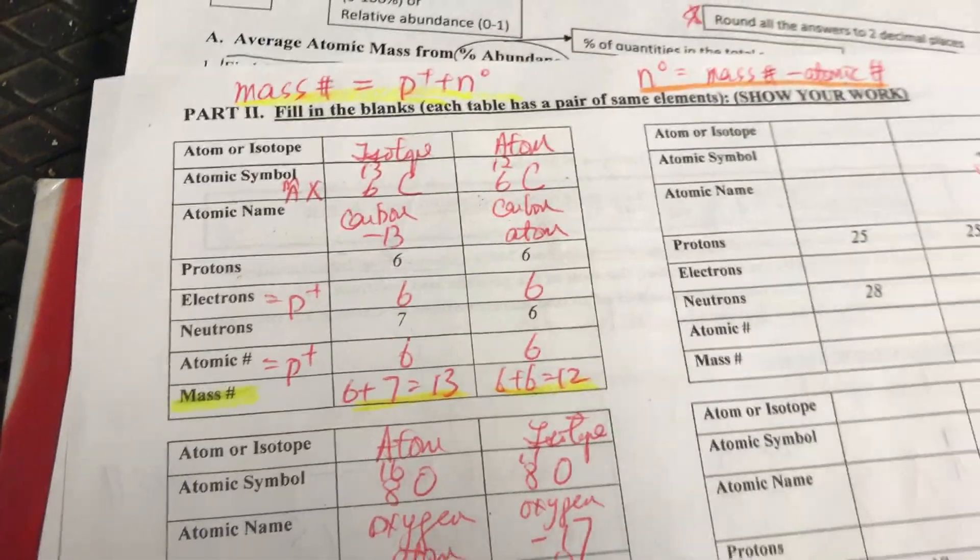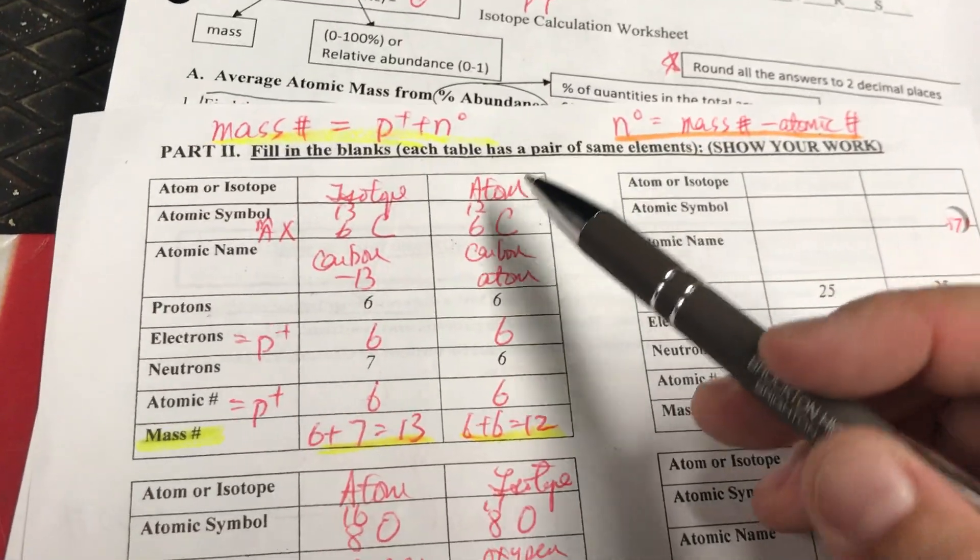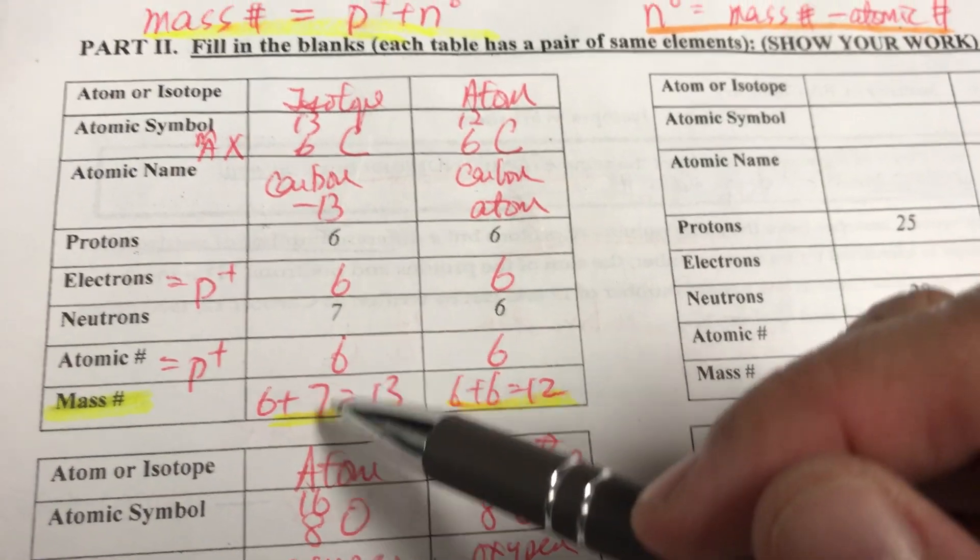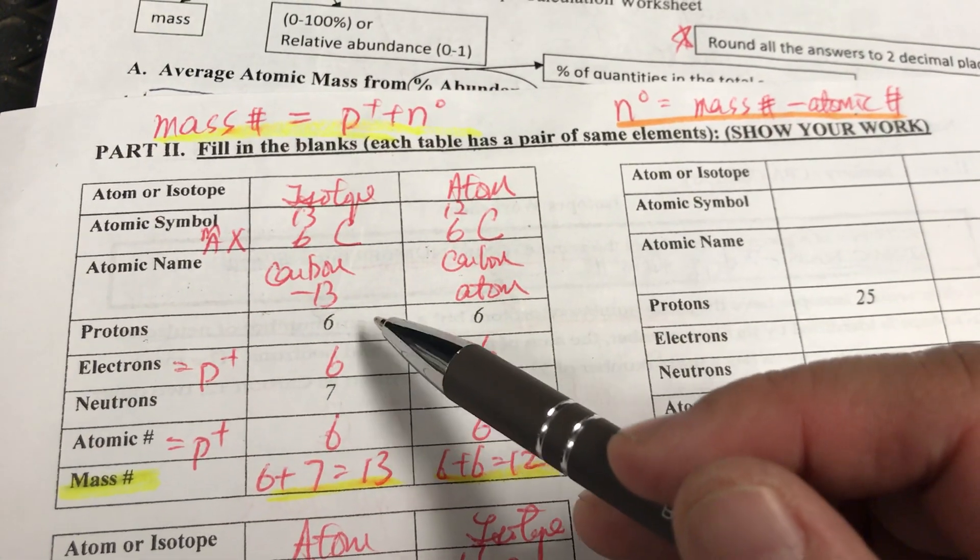All right, so this is the back page of the isotope worksheet. We have two formulas. First, let's look at this question. We had to find the mass number by adding the proton and neutron together.